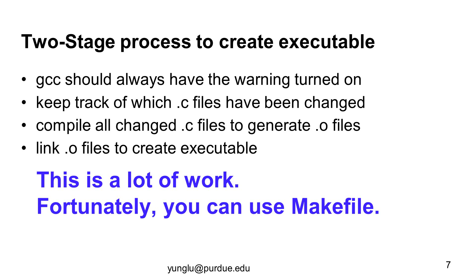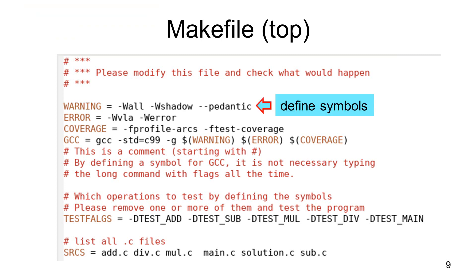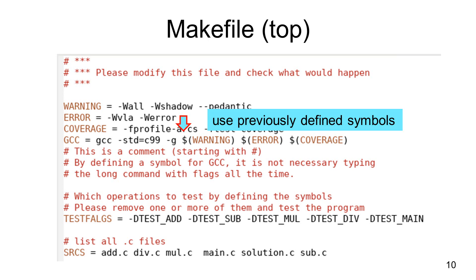Makefile, by convention, uses uppercase M and lowercase letters for the other letters. Makefile is a text file that tells Linux how to create an executable file from one or several text files. Makefile has different syntax from C programs. Comments start with the pound sign, not slash slash. The next three lines define symbols: warning, error, and coverage. By convention, symbols use uppercase letters. These symbols will be used later in the same Makefile. The next line defines a new symbol for GCC using the previously defined symbols. In Makefile, using a previously defined symbol requires the dollar sign and parentheses, as shown here.